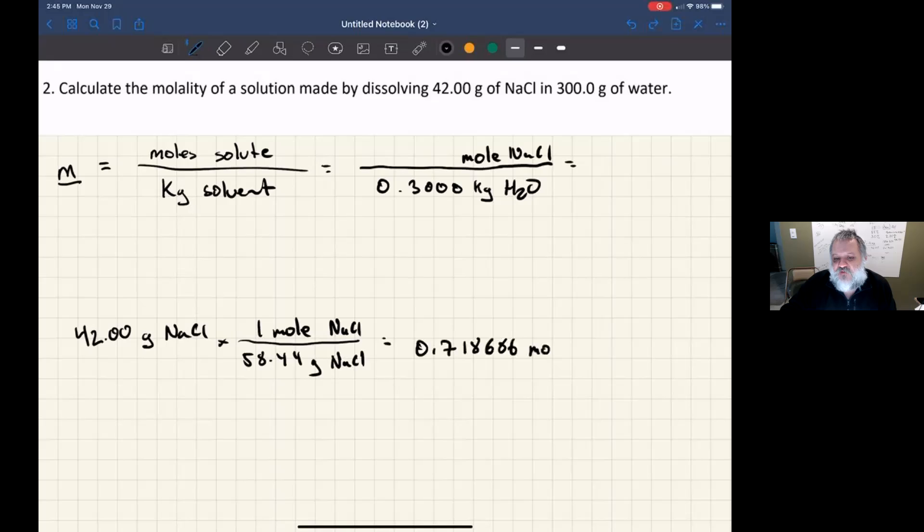So doing that, I get 0.718686 moles of sodium chloride. So I'll go ahead and put that in the formula up there. And I'll go ahead and notate the sig fig there. That's that fourth digit.